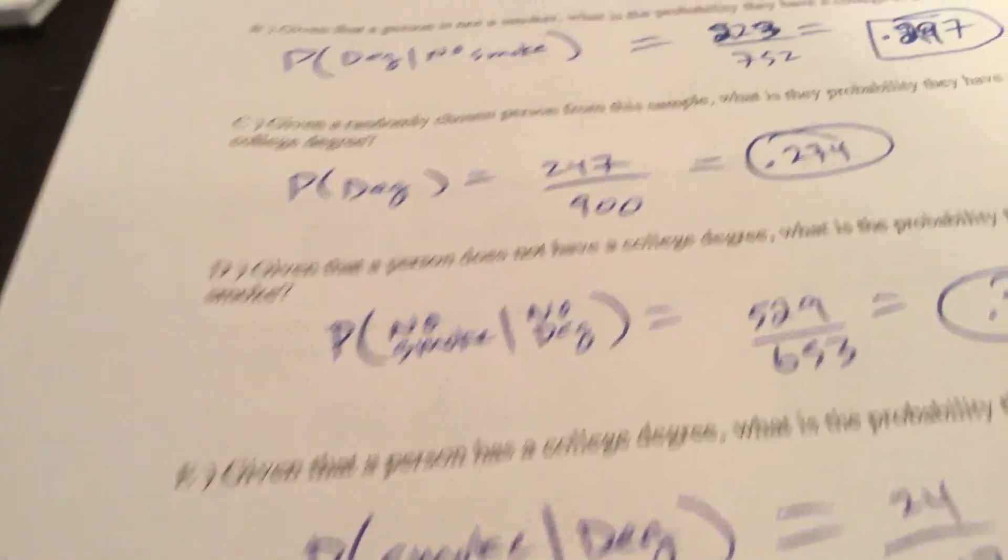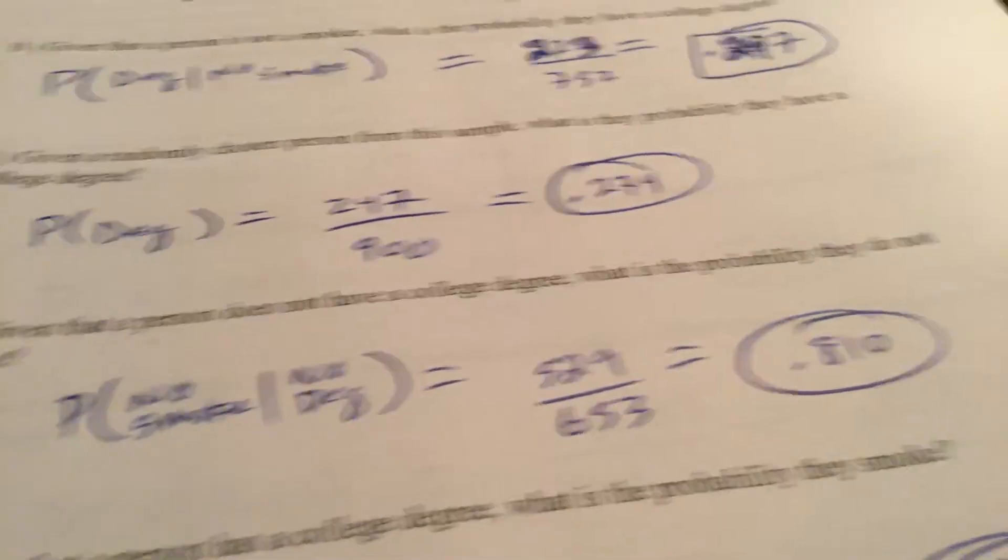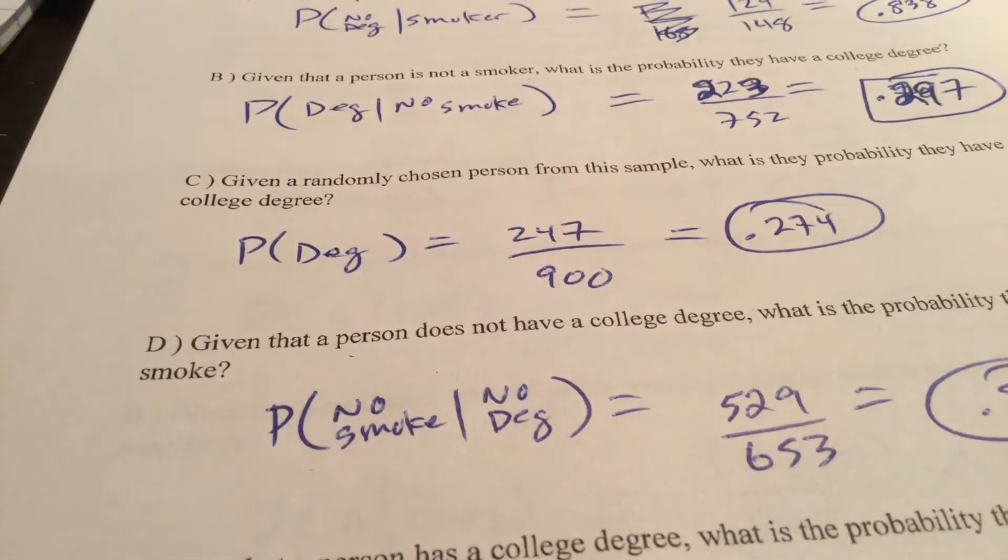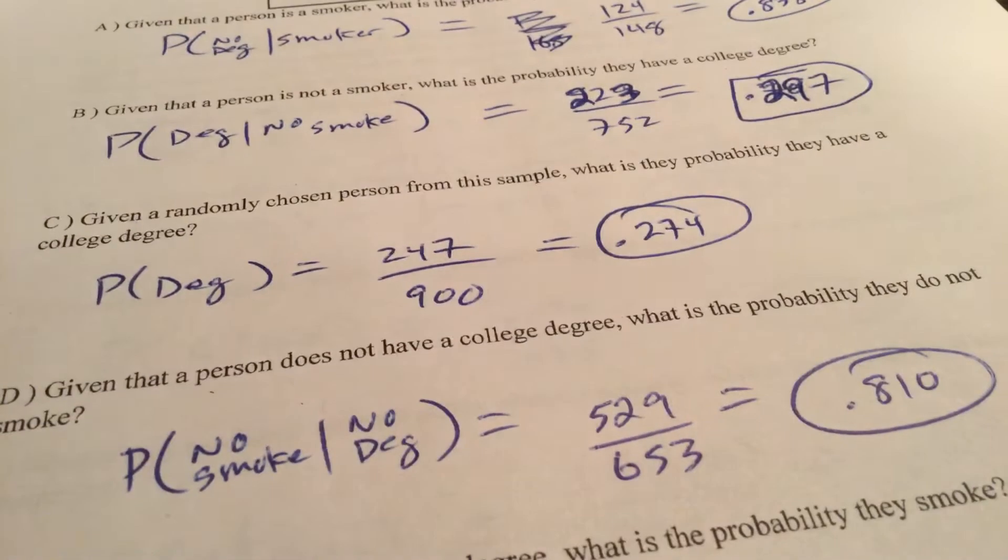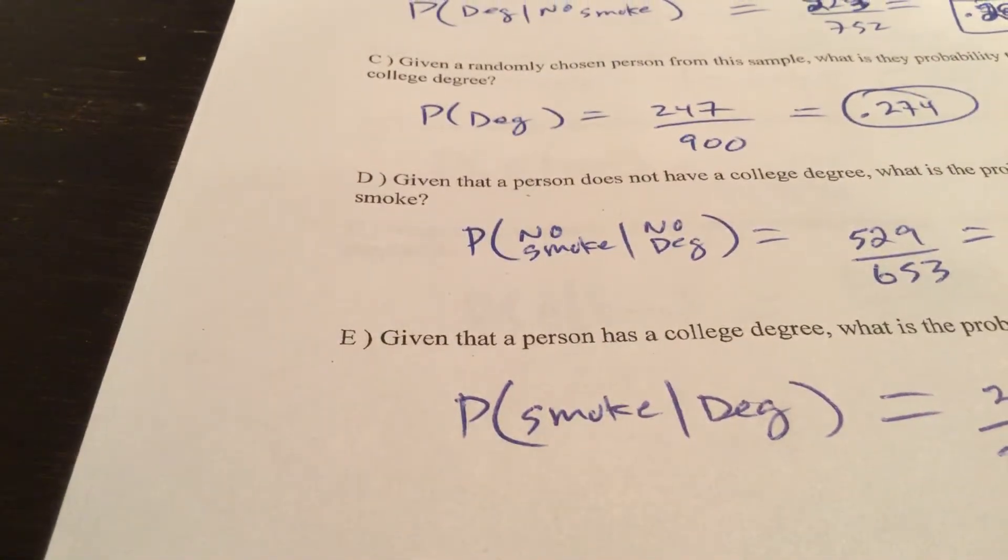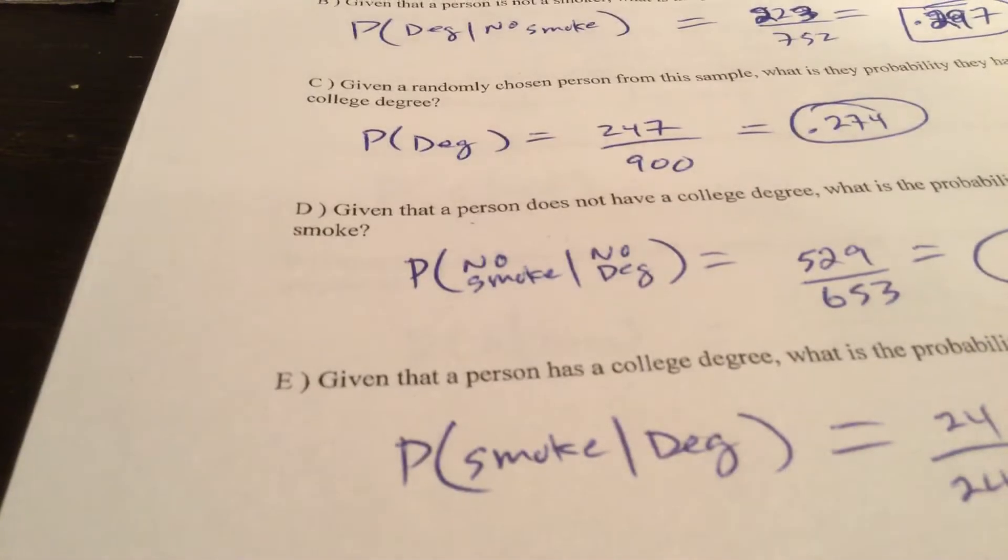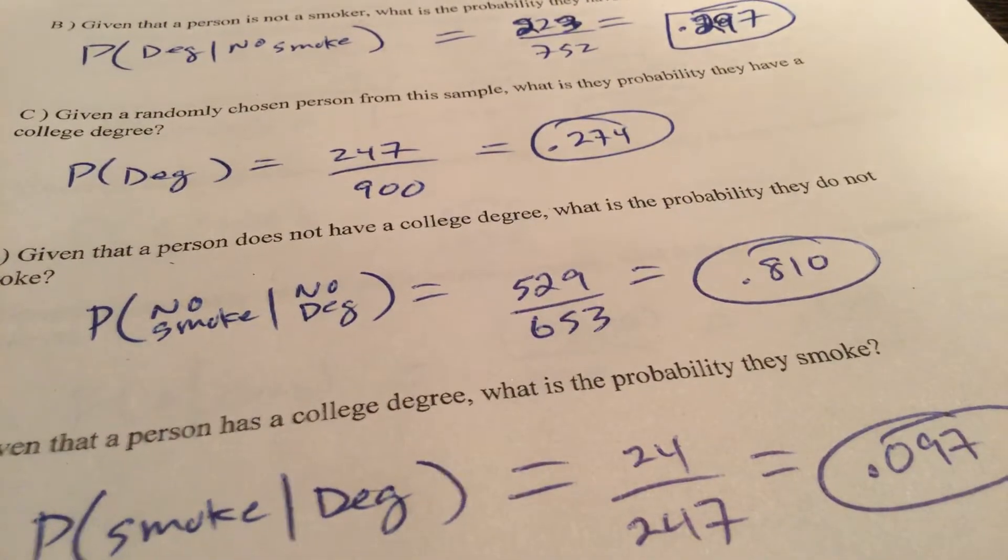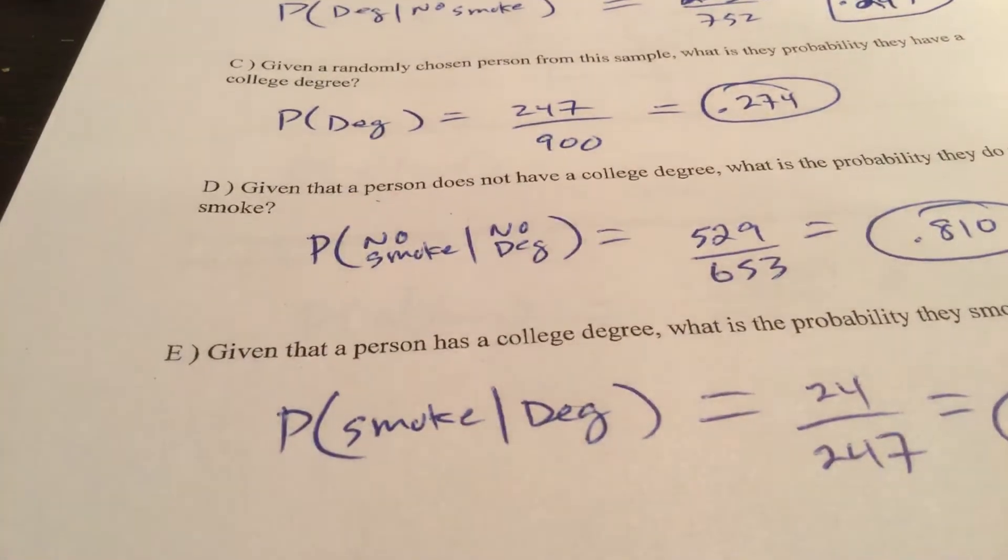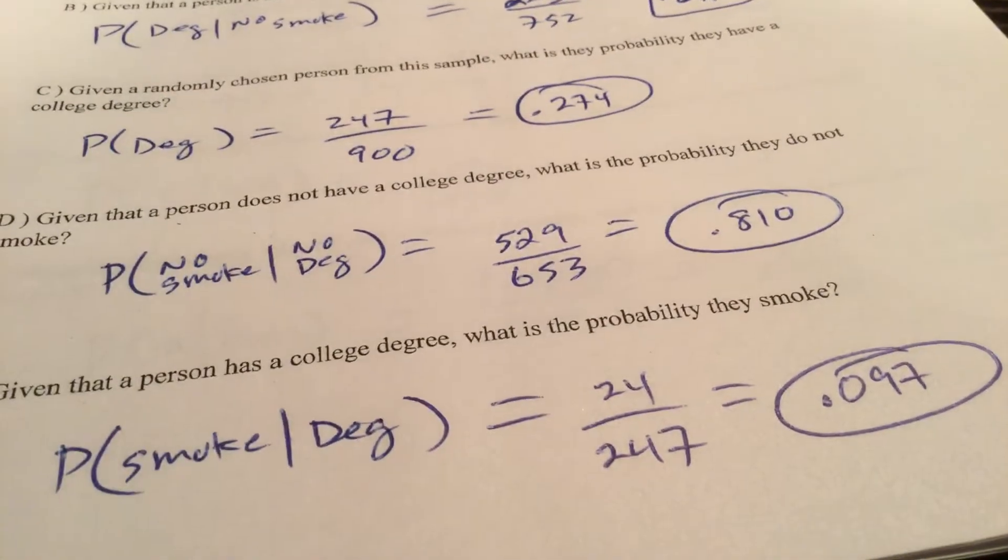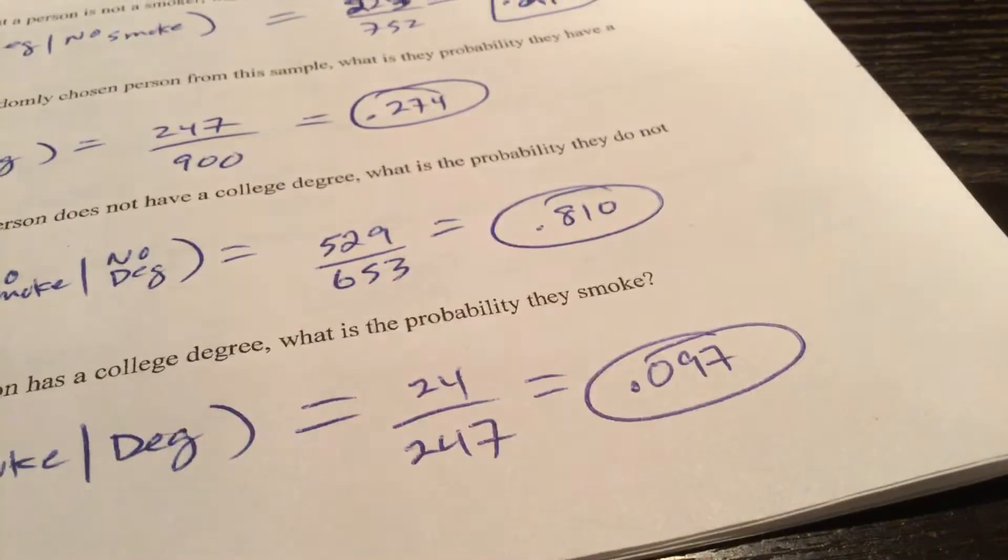C, given a randomly chosen person from a sample, what is the probability they have a college degree? So the whole sample of 900 is involved. 247 had a degree. Probability someone has a degree is 274. Given that they do not have a college degree, what is the probability that they do not smoke? So probability no smoke given no degree. 653 do not have a college degree and 529 of those folks don't smoke. Given that a person has a college degree, what is the probability that they do smoke? 247 have a degree and 24 of those smoke.